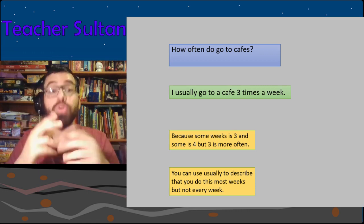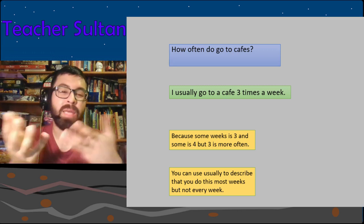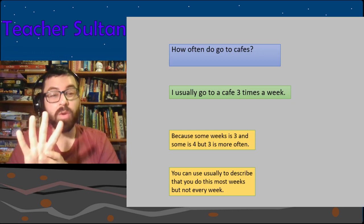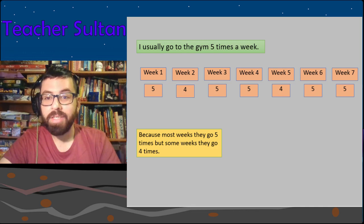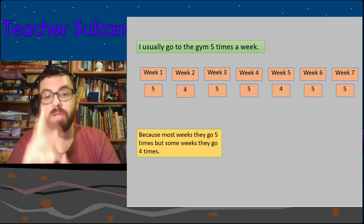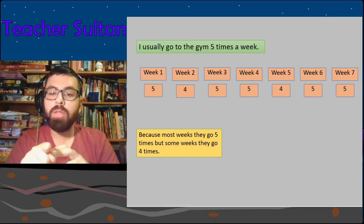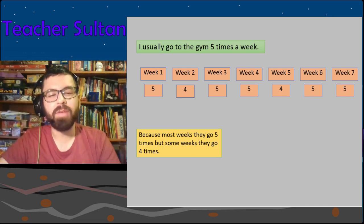Another example: 'I usually go to the gym five times a week,' but sometimes when you're tired or sick it's four times. Looking at the weeks: five, four, five, five, four, five — mostly five times, so 'I usually go to the gym five times a week.'